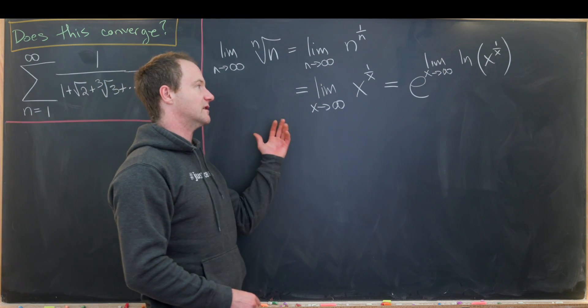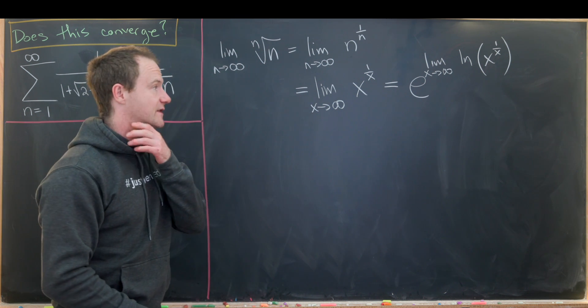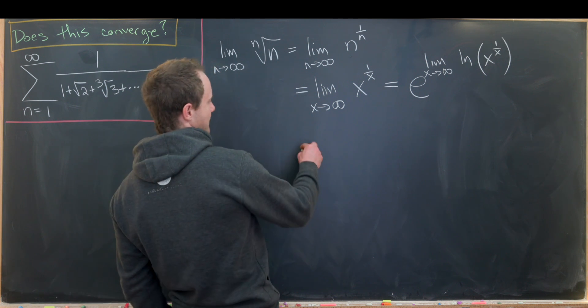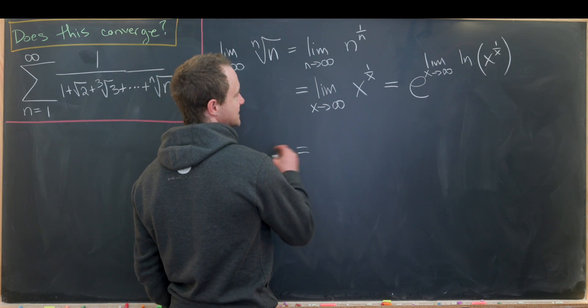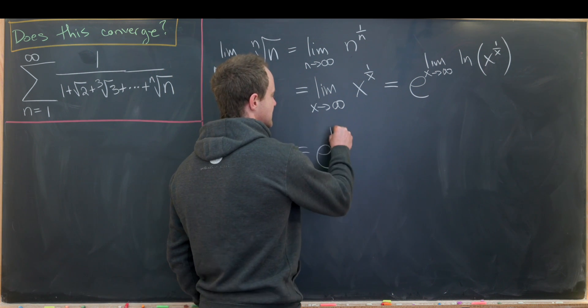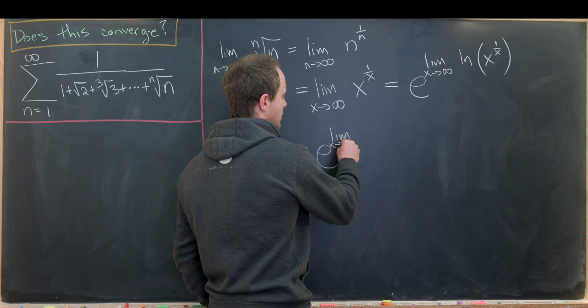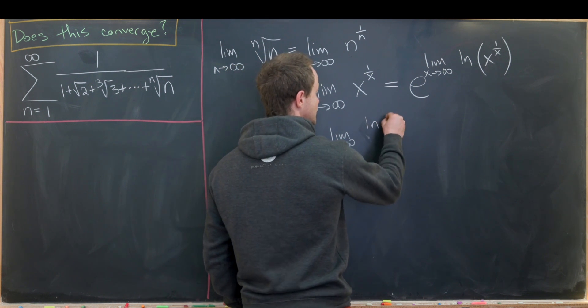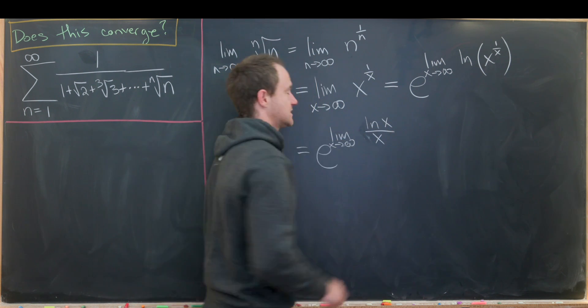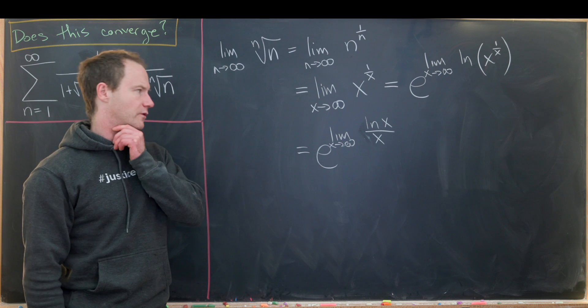So we have something like that. Here we use the fact that the natural log is a continuous function to bring the natural log inside the limit. Okay, so anyway, what do we have now? So this is going to be e to the limit as x approaches infinity of the natural log of x over x. So that's just from logarithm rules.